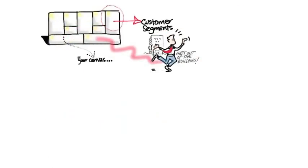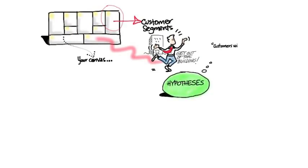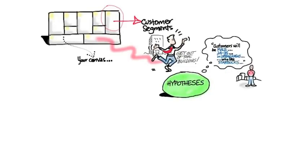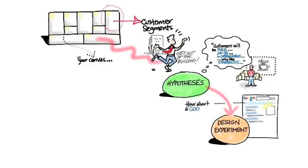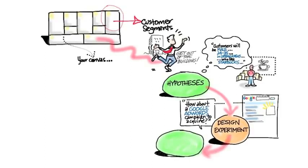So what you're doing outside the building is you start with these hypotheses. In this case, let's just take an example: the customers will be male, 24 to 35, live in urban areas. And then we're going to design some experiments — maybe a Google AdWords campaign, or if it's a physical product, go out and meet them personally. Then run some tests and analyze the data.